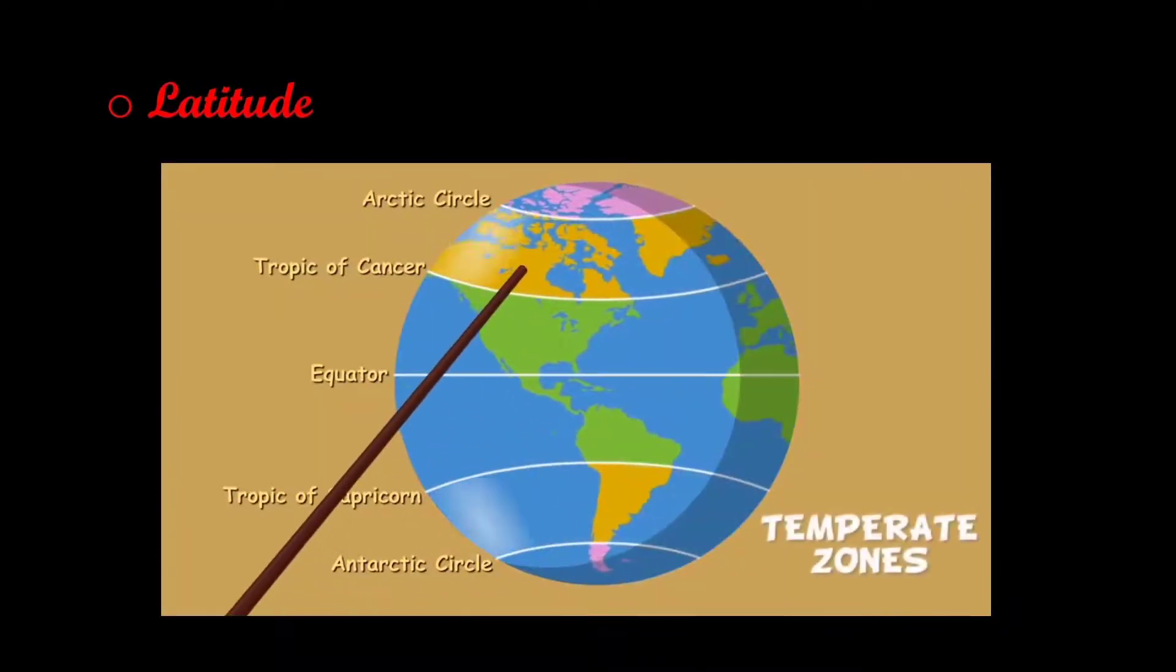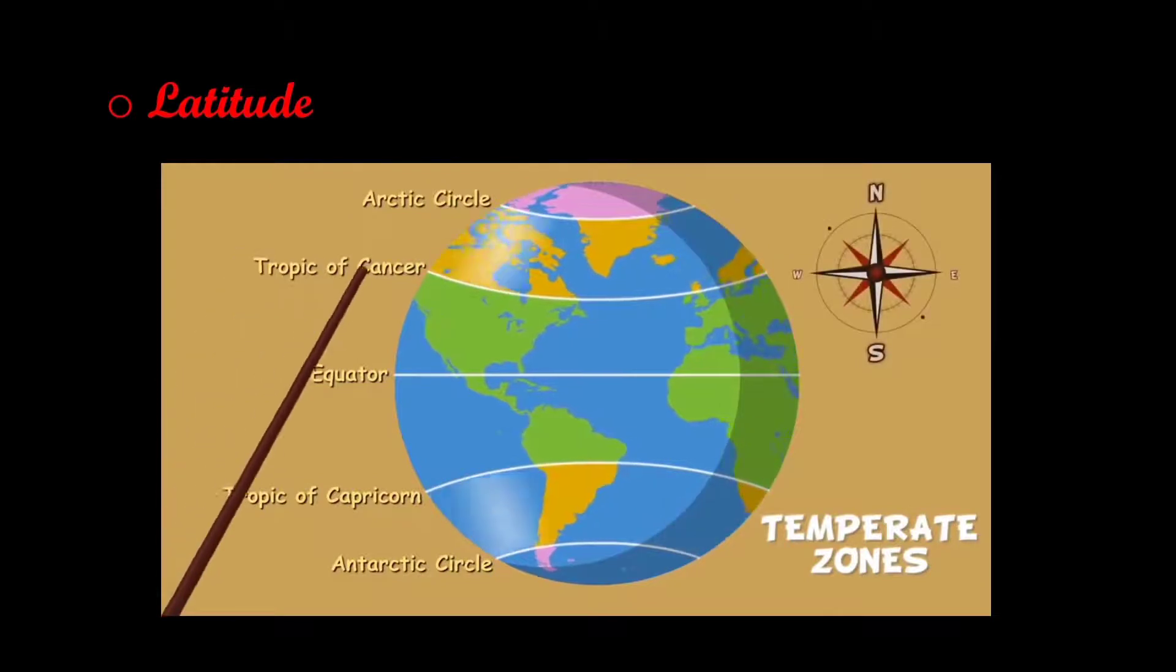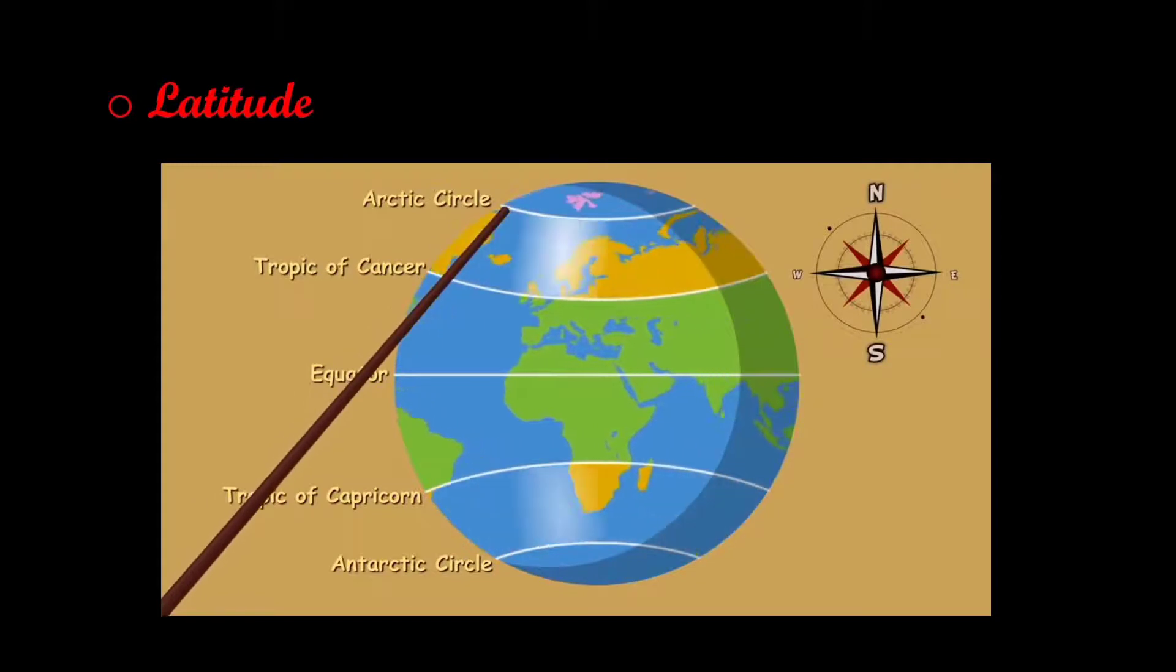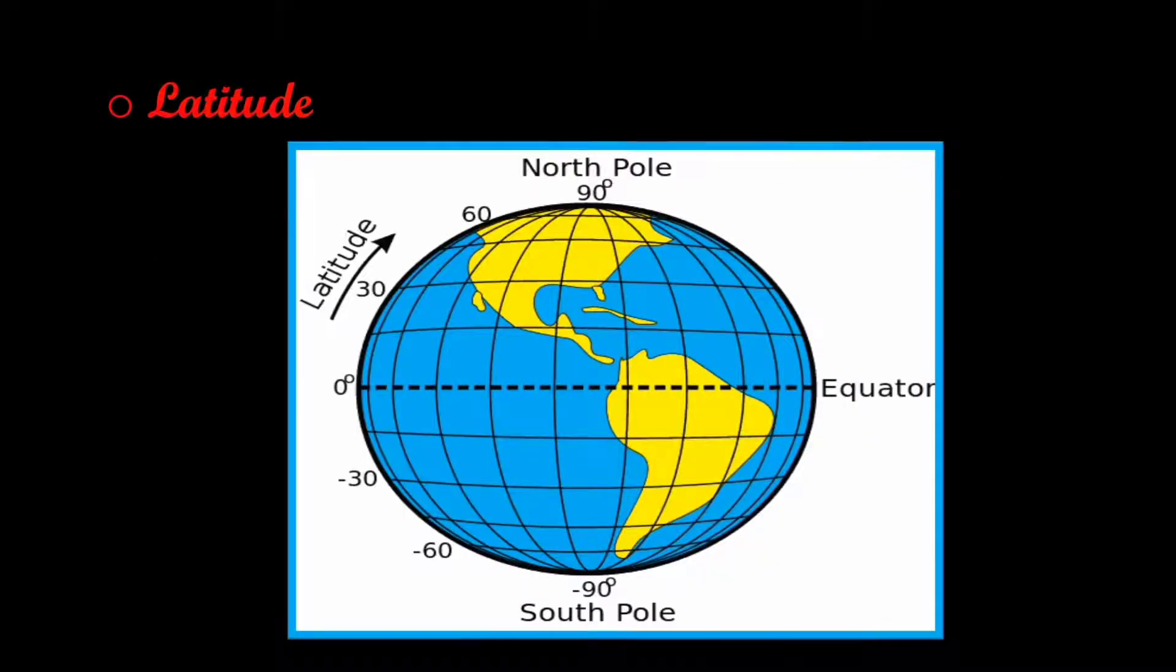Temperate zone refers to the region present between the torrid and frigid zones. Lower the latitude, higher the temperature, and higher the latitude, lower the temperature. So latitude of a place affects its climate.